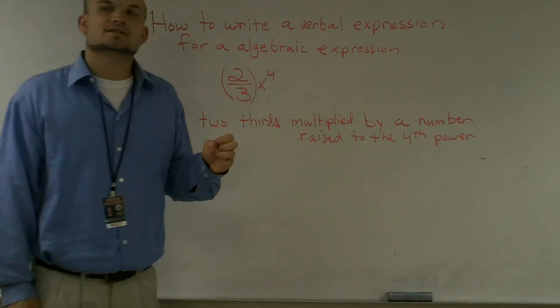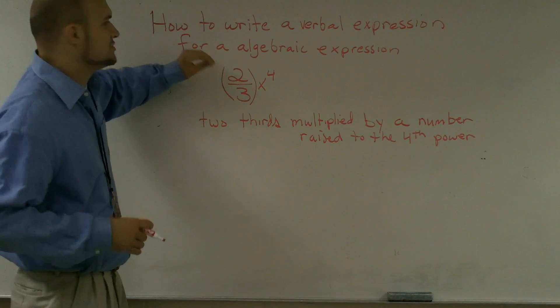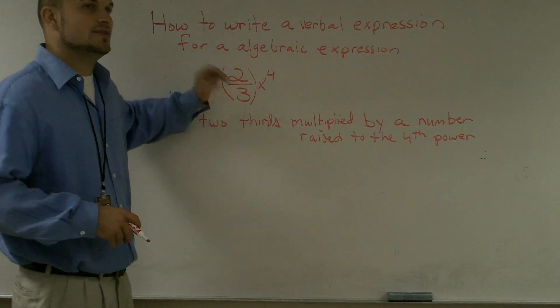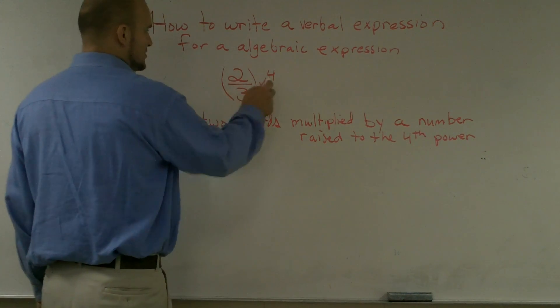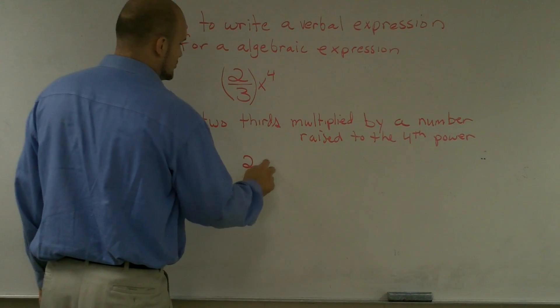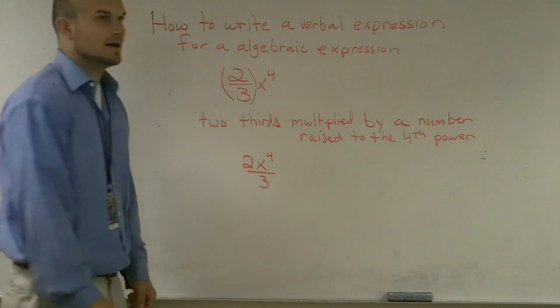You could also look at this in a different way. And I show you this way not to confuse you, but to also show you that this can be represented in a different way. You could also represent two-thirds x as two times x to the fourth, all divided by three.